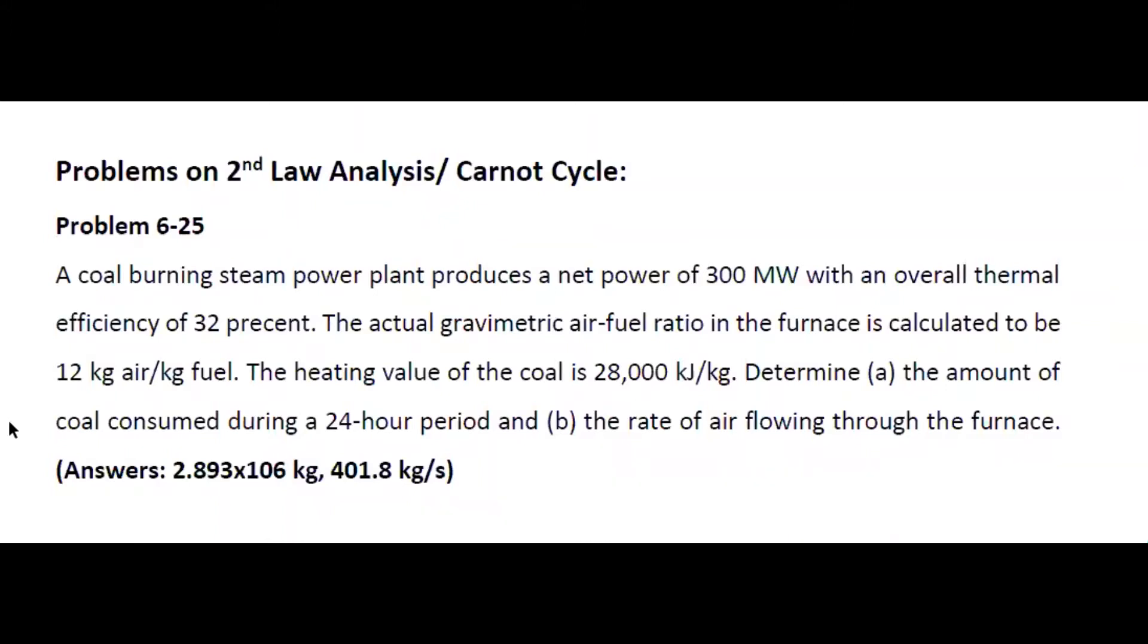The heating value of coal is 28,000 kJ per kg, and we are to determine the amount of coal consumed in a 24-hour period and the rate of air flowing through the furnace. So we want to see how much of this is consumed, and to see that we need to see how much energy is being used to create this 300 MW of power. If we have power and time, we can relate that back to energy to find how much coal went into this plant.